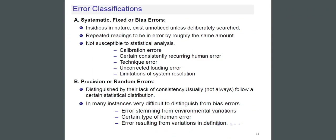Precision or Random Errors. Distinguished by their lack of consistency, they usually — but not always — follow a certain statistical distribution. In many instances, they are very difficult to distinguish from bias errors.